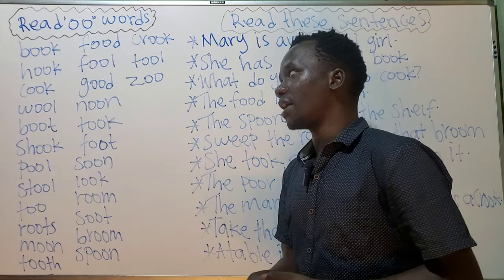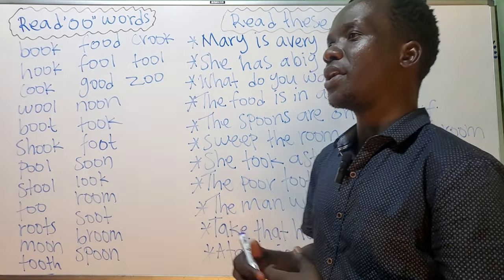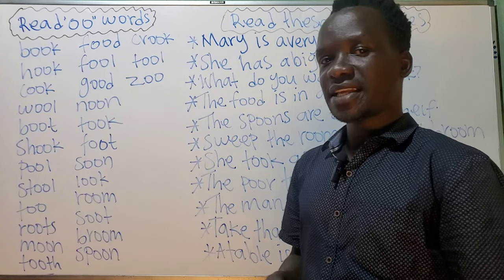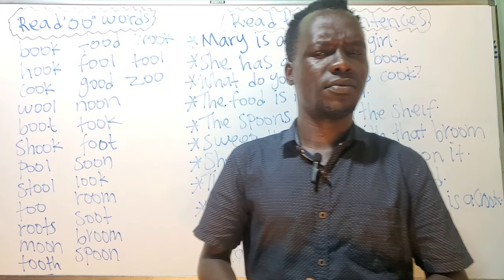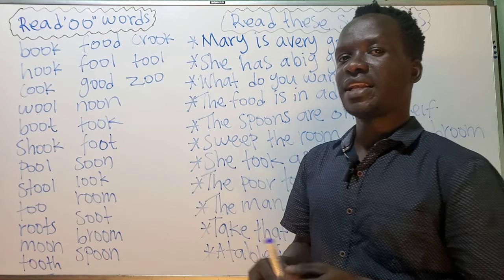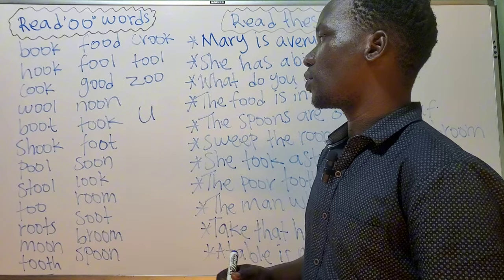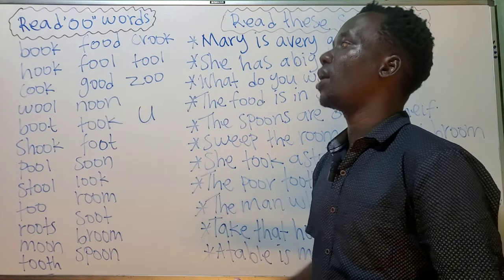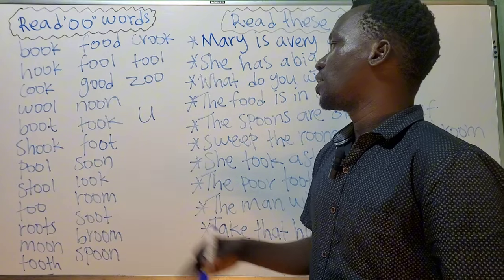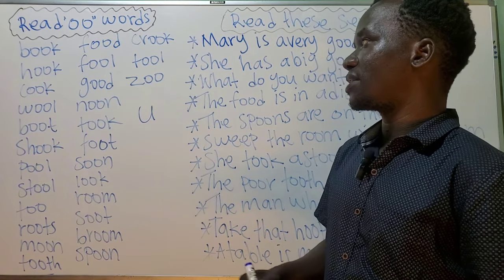Today what do we have? We have double O. How do you read double O? Have you ever seen a word that has double O? The word that has double O normally sounds like 'u' — yes, double O just sounds like 'u'.